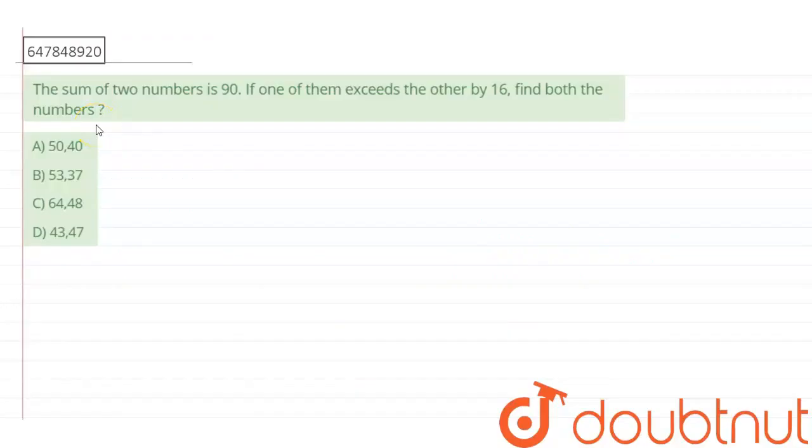Hi, here the question says that the sum of two numbers is given as 90. If one of them exceeds the other by 16, then we need to find both the numbers, right? We need to find both numbers.